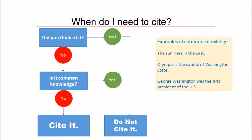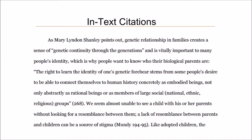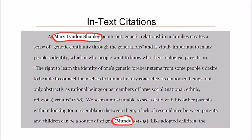Common knowledge includes things that you could expect most people reading your paper to know — something they could just accept as true without having to look it up. To cite a source, you'll create an in-text citation and a bibliographic entry. The in-text citation is right in your paper and tells the reader which person you got your fact or idea from.